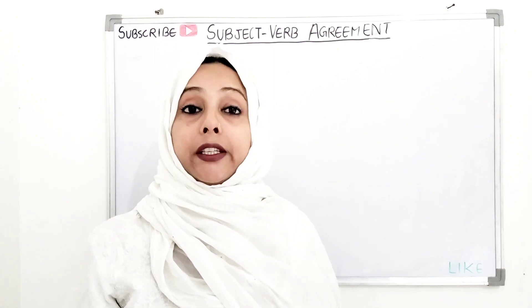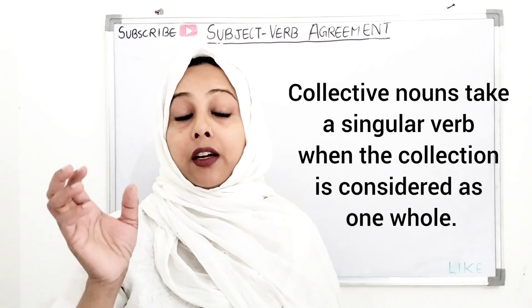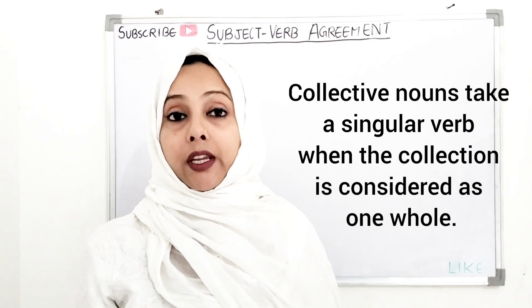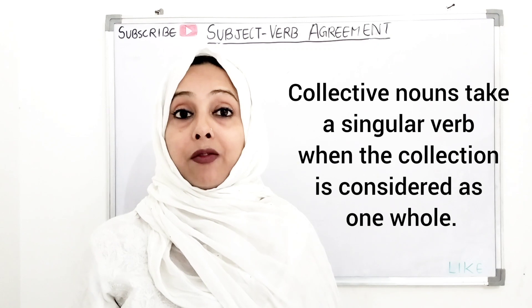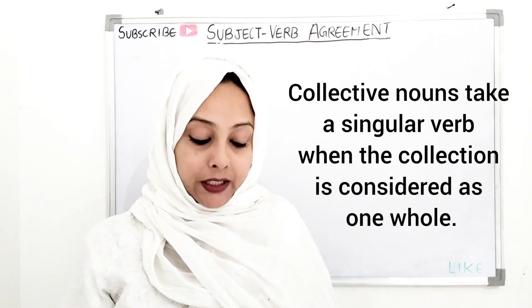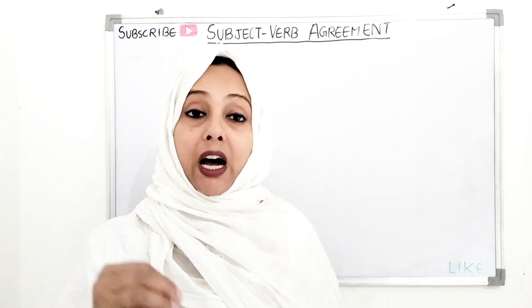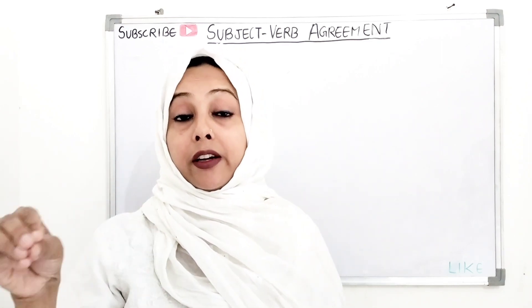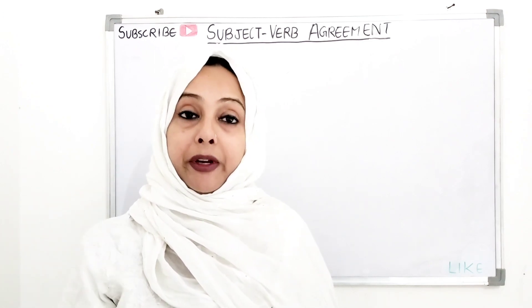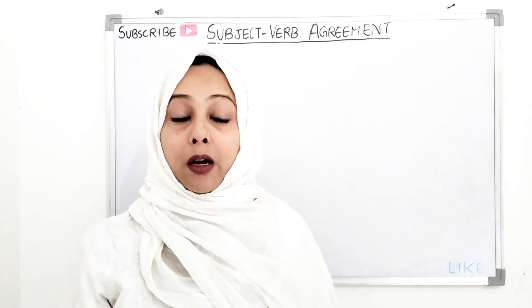If we have used a collective noun in a sentence and we are considering it as a whole, then we use a singular verb. For example: 'The committee has issued its report.' Here I am considering the whole committee as one unit, so I have used the singular verb 'has.' Compare this to when the committee is divided — there we used a plural verb.